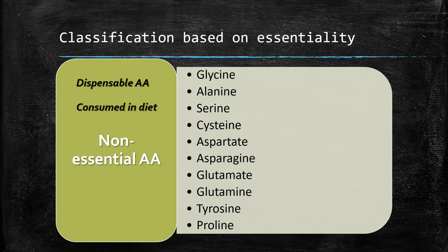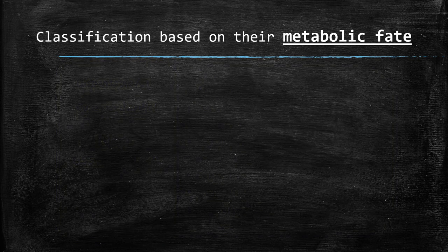The non-essential amino acids are glycine, alanine, serine, cysteine, aspartate, asparagine, glutamate, glutamine, tyrosine and proline. The other classification is based on amino acid metabolic fate.